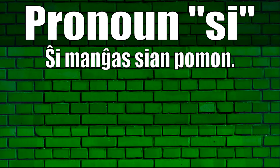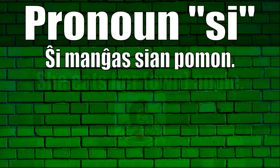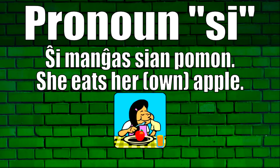Another example is: ŝi manĝas sian pomon. Remember that we can add the letter a to any pronoun to make it possessive. We added the letter n to sia and pomo because it's the direct object of the sentence — it's the thing that's being eaten. So ŝi manĝas sian pomon means 'she eats her apple,' and this means she eats her own apple, not anyone else's. If we said ŝi manĝas ŝian pomon instead, this would mean she eats her apple, but it's another person's apple.